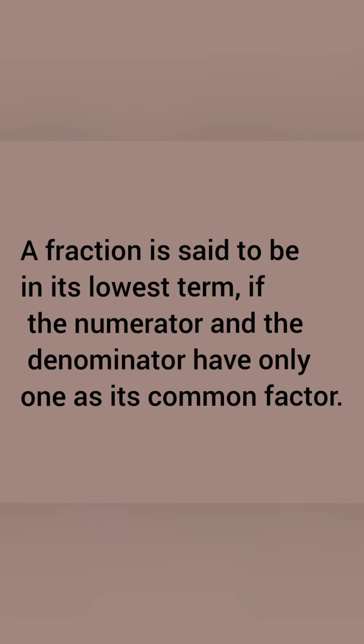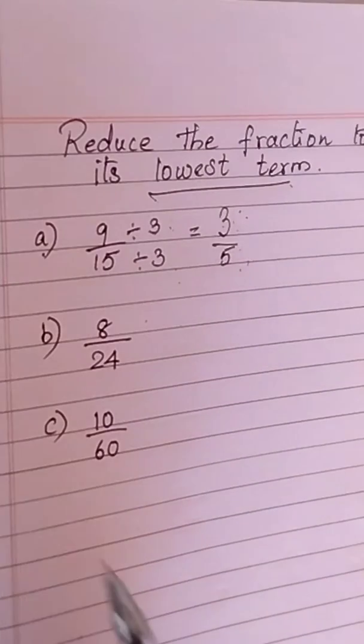A fraction is said to be in its lowest term if the numerator and the denominator have only one as its common factor. As we saw in the last example, 3 by 5 has only one as its common factor.